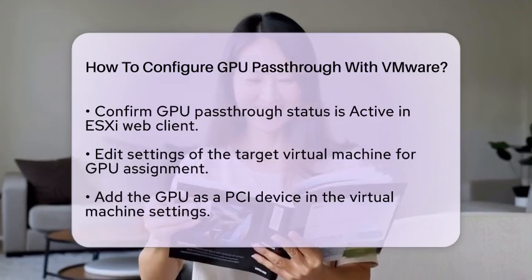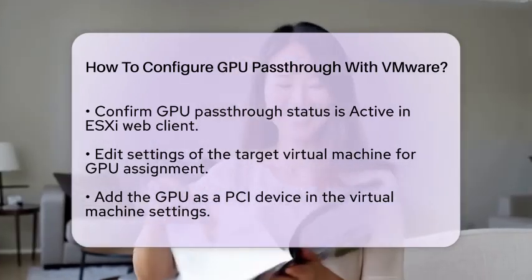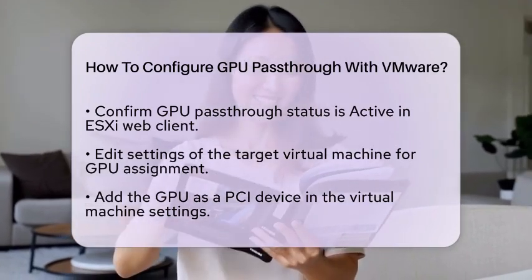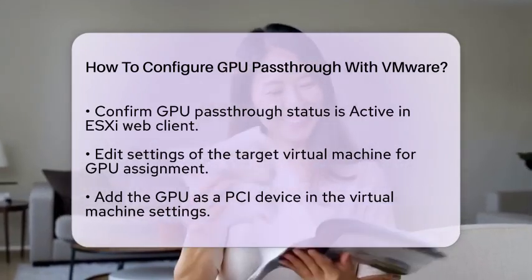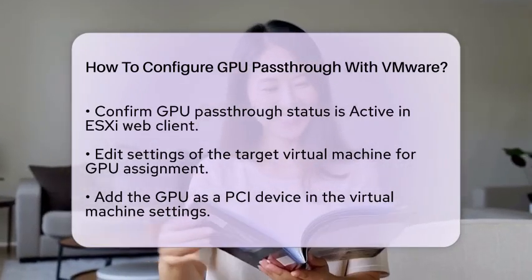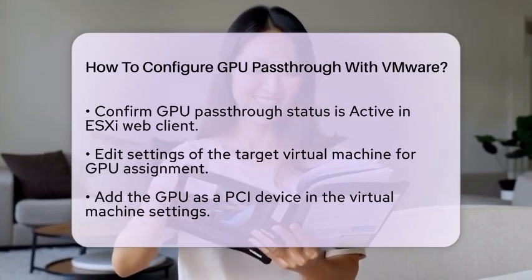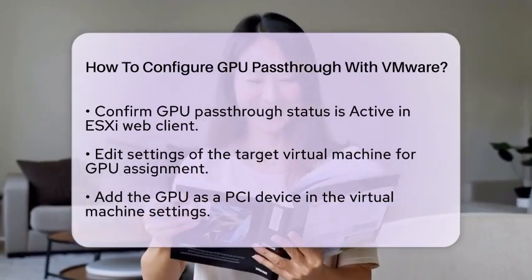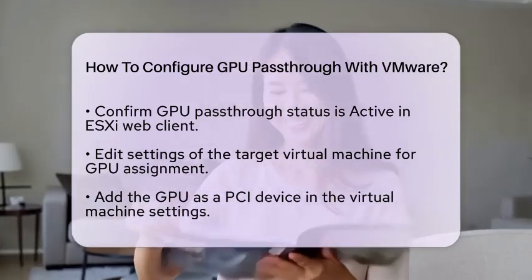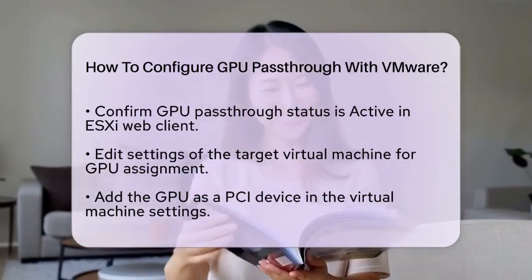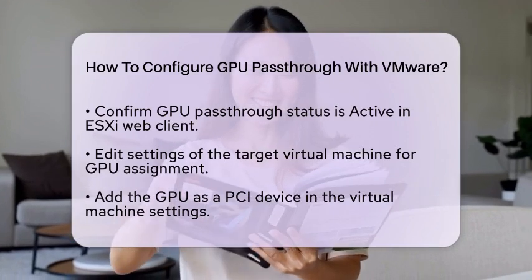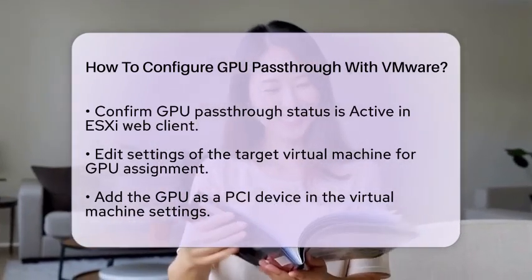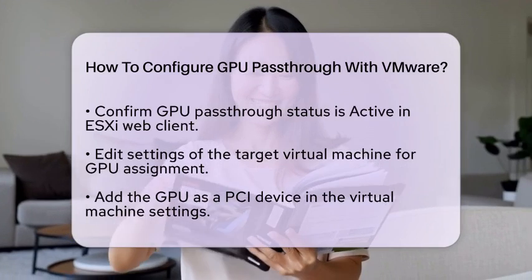Next, configure the virtual machine options for proper GPU initialization. In the virtual machine settings, go to VM Options, then Advanced, and click on Edit Configuration. Look for the configuration key hypervisor.cpuid.v0. If this key exists, set its value to false to ensure proper initialization of the GPU.